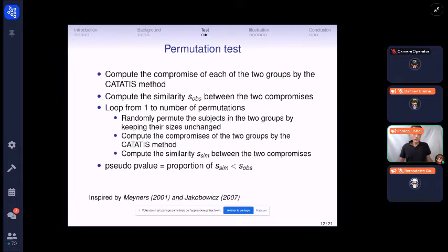So some subjects in group A go in group B and the same number of group B go in A. Similarly, we compute the compromises of the two new groups by the CATATIS method and finally we compute the similarity between these two compromises. So this similarity will be high since we have no structure of the subjects. And so we can compare the observed similarity and the similarities obtained after permutations. And we can build a pseudo p-value which is given by the proportion of similarities obtained after permutation between the compromises and observed similarity between the two compromises.